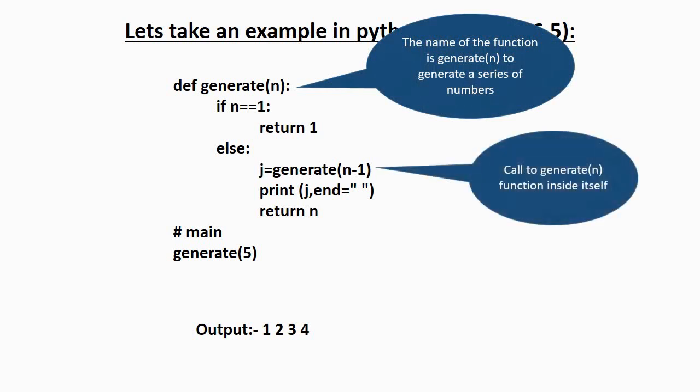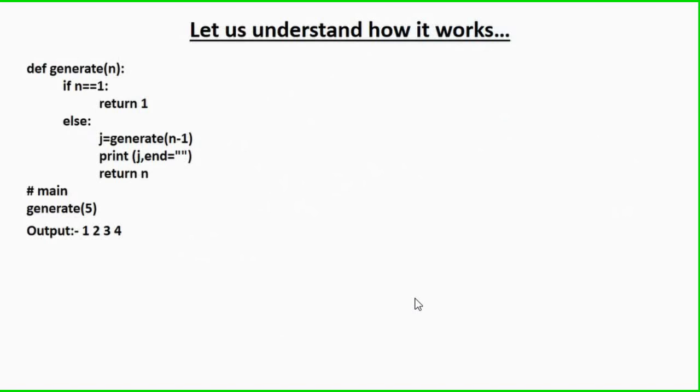You can clearly see the call to the function 'generate' — we are giving a call to the function 'generate' inside itself. Now let us understand how exactly we are getting the output 1, 2, 3, and 4.